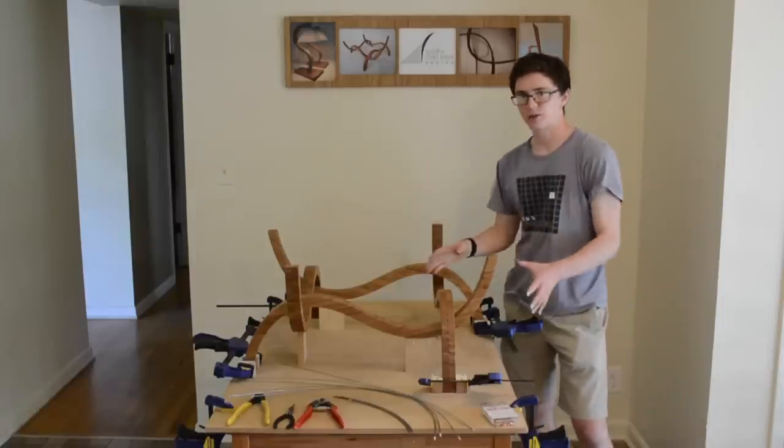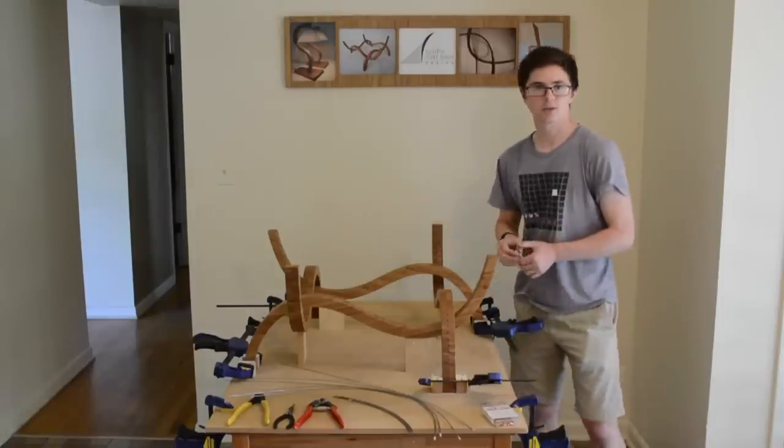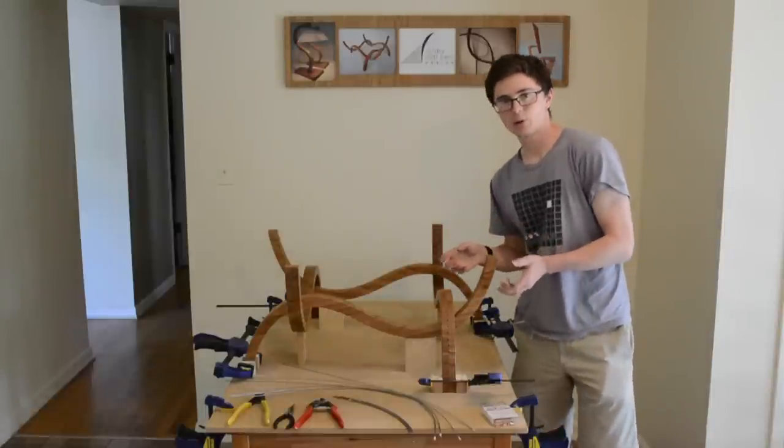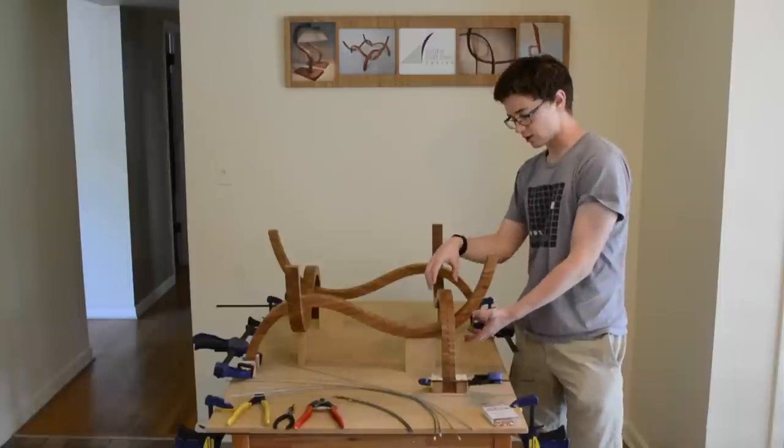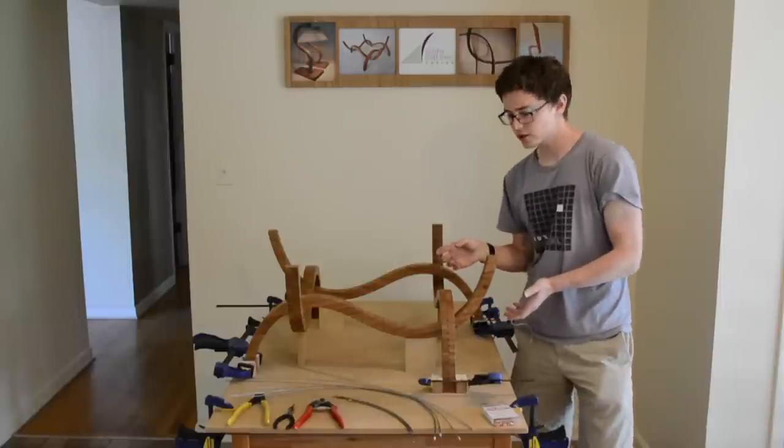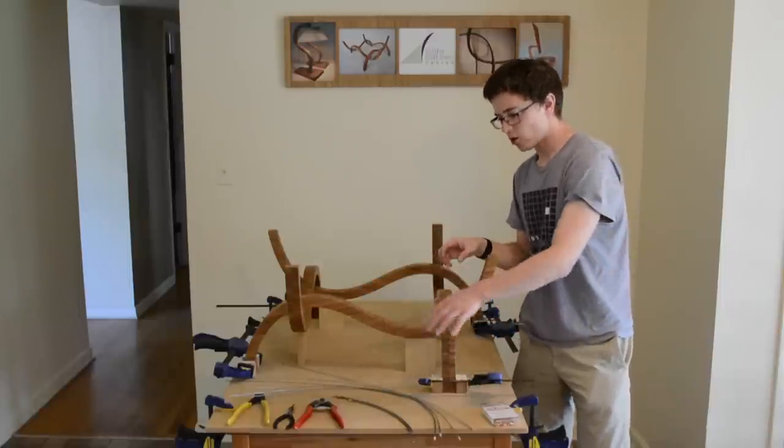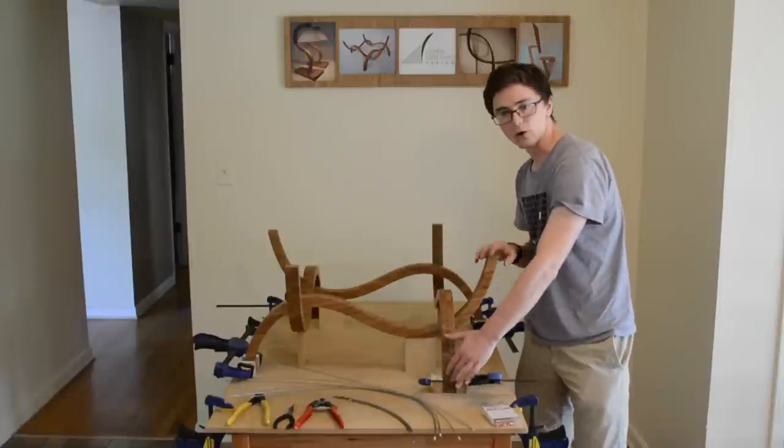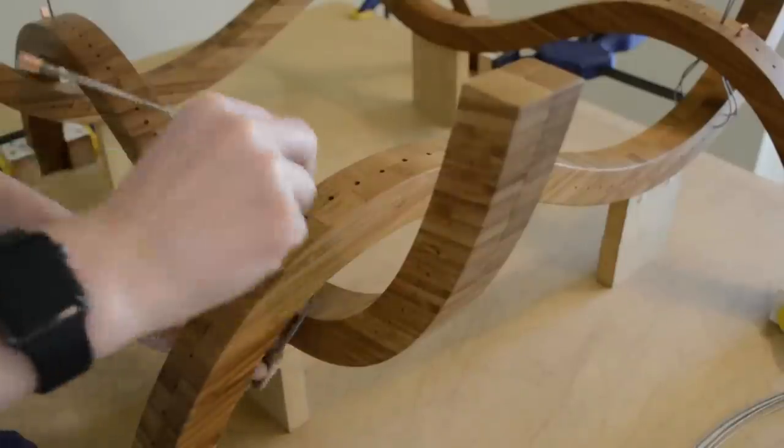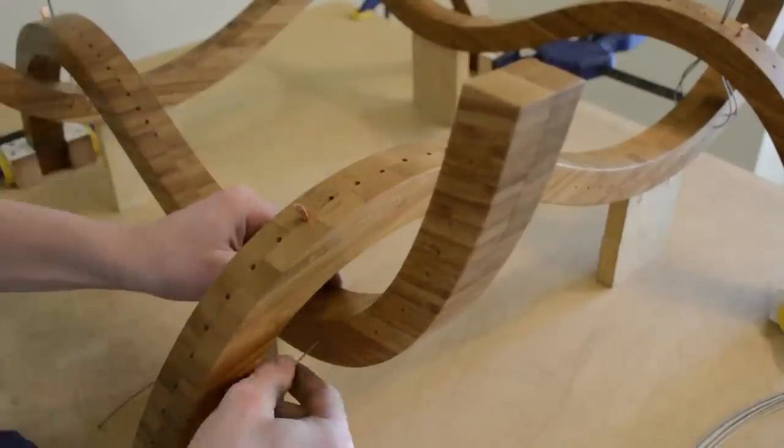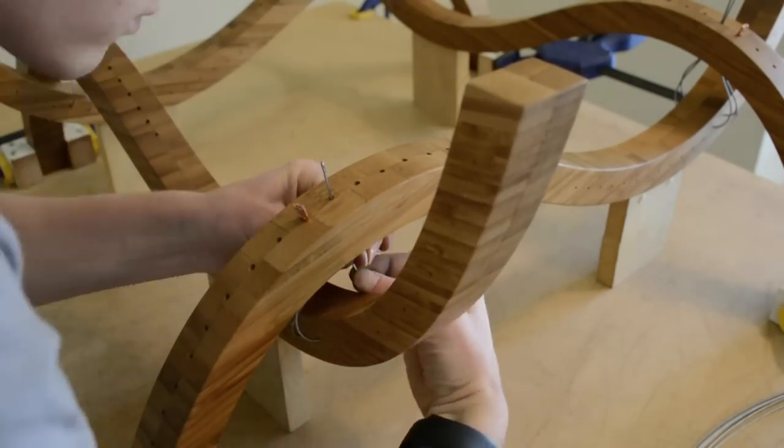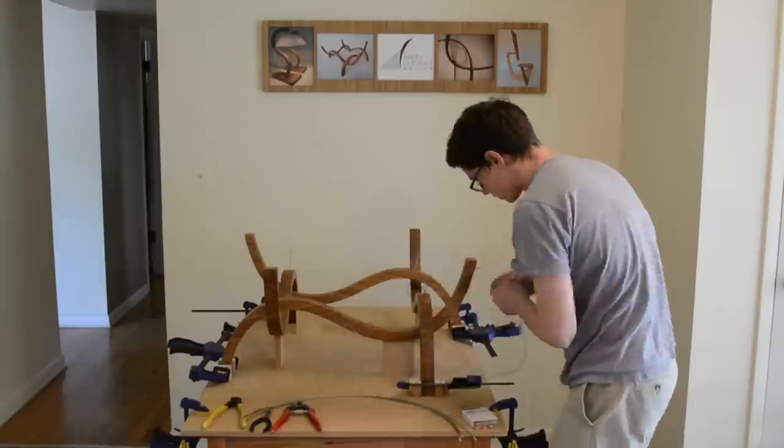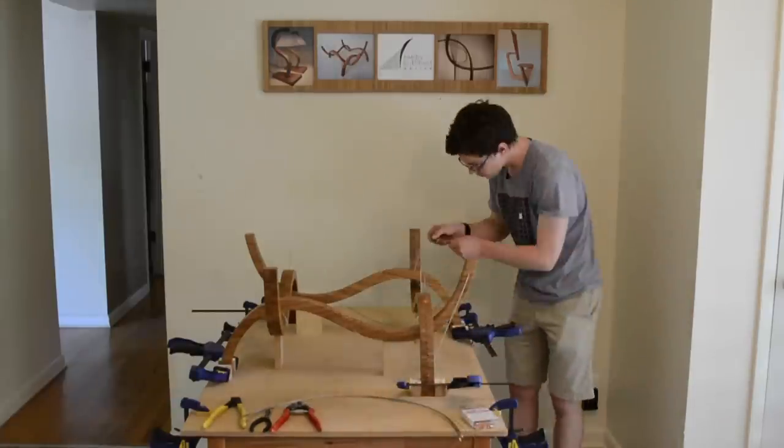So once the legs are all secured in place it's time to start adding the cables. Since the design is built on the idea of using opposing forces created by the cables to hold all these curves in stable relation to each other, it's important to alternate adding inner and then outer cables. Since the inner cables want to pull the curves together and the outer cables want to pull them apart, alternating between adding the two helps keep the forces evenly distributed throughout the construction process.